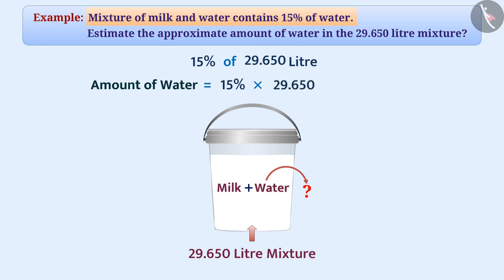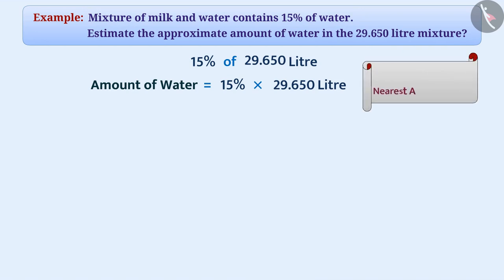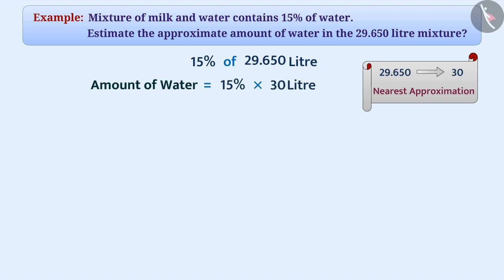First of all we will do the nearest approximation of 29.650 litres, which will be 30 litres. In this way, the amount of water will be 15% of 30 litres. We can write this as (10% plus 5%) multiplied by 30 litres, that is 10% multiplied by 30 litres plus 5% multiplied by 30 litres.